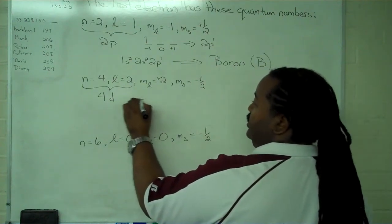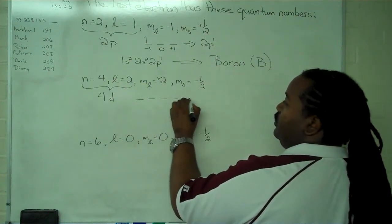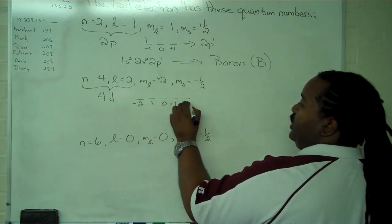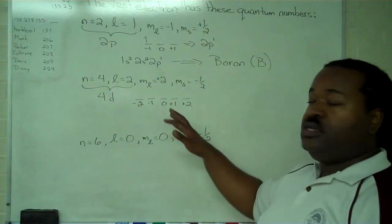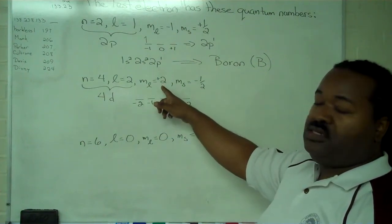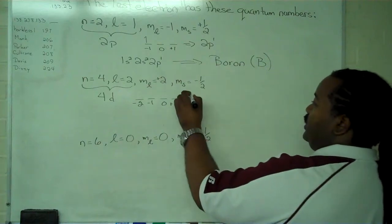Once we know that, we can write out these sub-orbitals. There are five of them labeled minus 2, minus 1, 0, plus 1, and plus 2. Now that we have those, we see that it's a spin down in the plus 2, as our last electron.